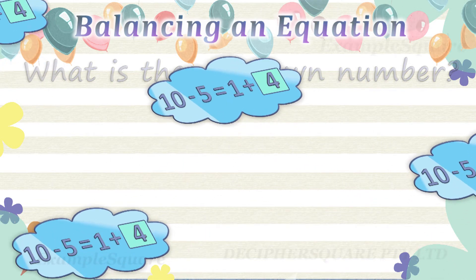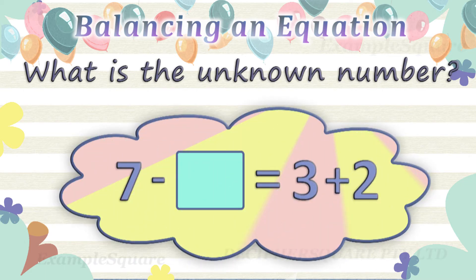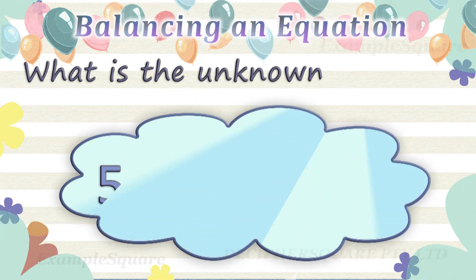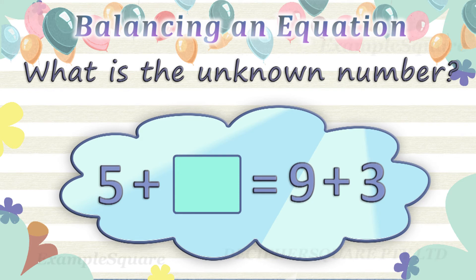In this equation, the left side is 7 minus an unknown number and the right side is 3 plus 2. 3 plus 2 on the right side equals 5. For this equation to balance correctly, the left side should also be equal to 5. The left side is 7 minus an unknown number. 7 minus 2 equals 5, so the unknown number here is 2.